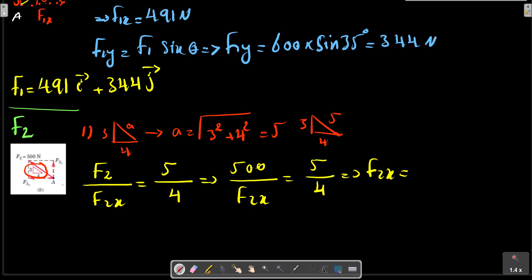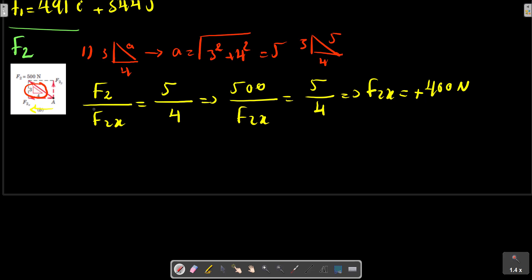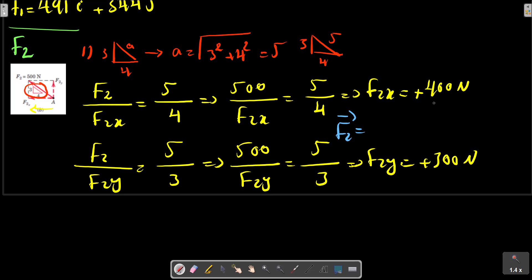F2X equals to, because it is in the opposite direction, minus. The magnitude is 500 newtons. And F2Y, 5 on 3. F2X, I want 3, F2Y, the magnitude. F2 equals to, is in the opposite direction of X.